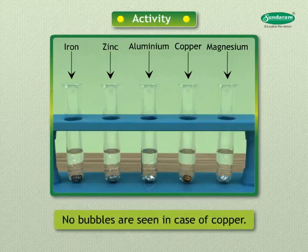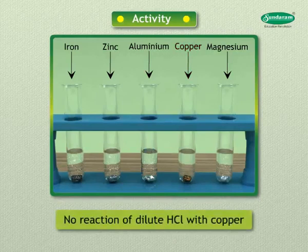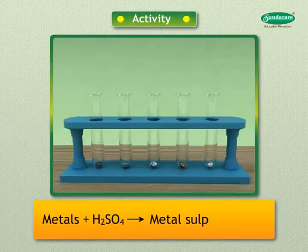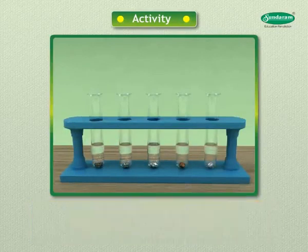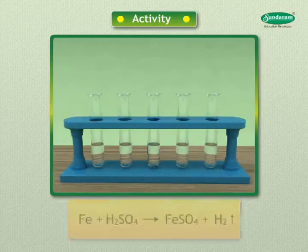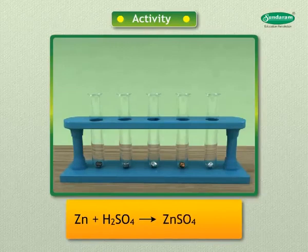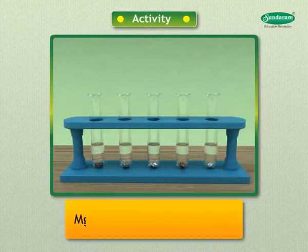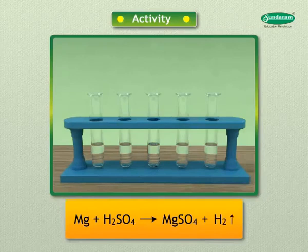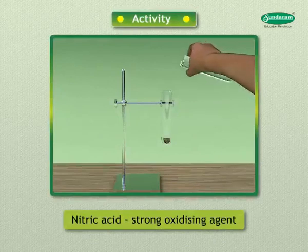No bubbles are seen in case of copper, showing that copper does not react with dilute hydrochloric acid. Metals also react with sulfuric acid to form metal sulfate and hydrogen gas: Fe + H₂SO₄ → FeSO₄ + H₂; Zn + H₂SO₄ → ZnSO₄ + H₂.